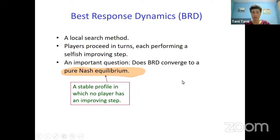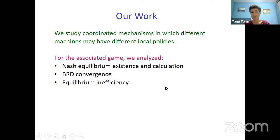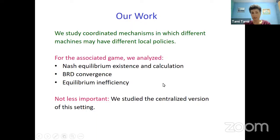That was a general introduction to coordinated mechanisms. In our work, we study such coordinated mechanisms in which different machines may have different local policies — every machine has its own local policy. For this associated game, we analyze the existence and calculation of Nash equilibrium, the convergence of best response dynamics, and the equilibrium inefficiency. Not less important, in the second part of my talk, we study the centralized version: every machine has its own local policy — how can we find a schedule that minimizes, for example, the total completion time?